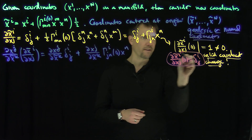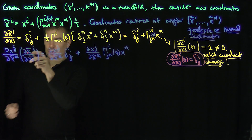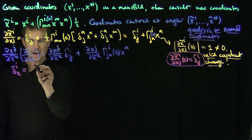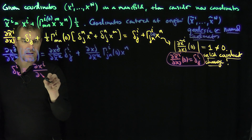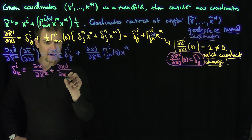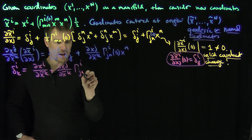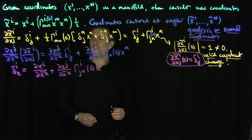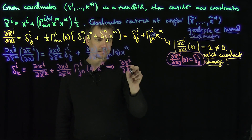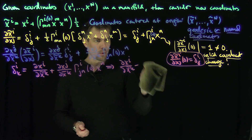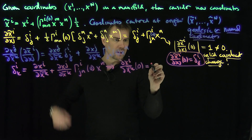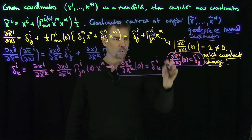This turns into: delta_ik equals partial x_i over partial x_tilde_k plus partial x_j over partial x_tilde_k times gamma_ijn at the origin times x_n. Plugging in the origin, the second term vanishes, giving us that partial x_i over partial x_tilde_k at the origin equals delta_ik. This says that at the origin, the coordinates behave like flat Euclidean space.